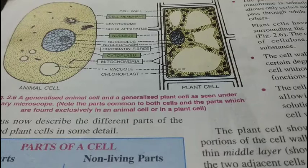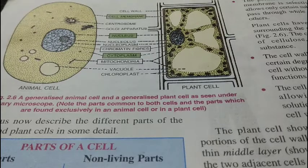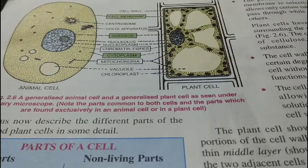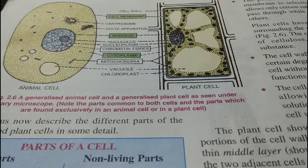The cell wall is freely permeable in nature and is a non-living substance made up of cellulose, whereas the cell membrane is made up of lipid and protein. The cell wall is a hard, rigid structure that allows most substances to go in and out of the cell.